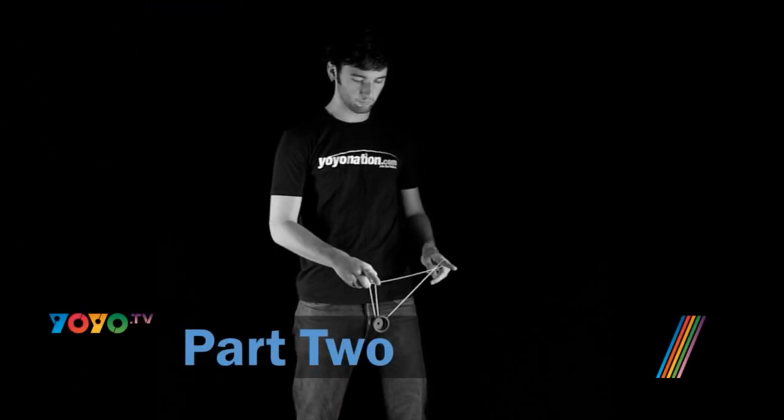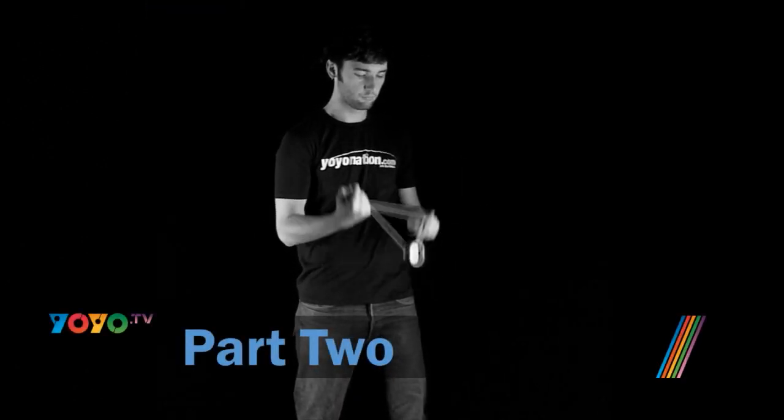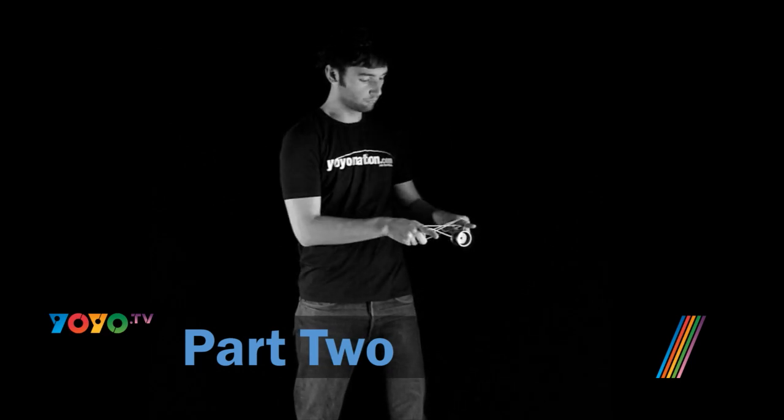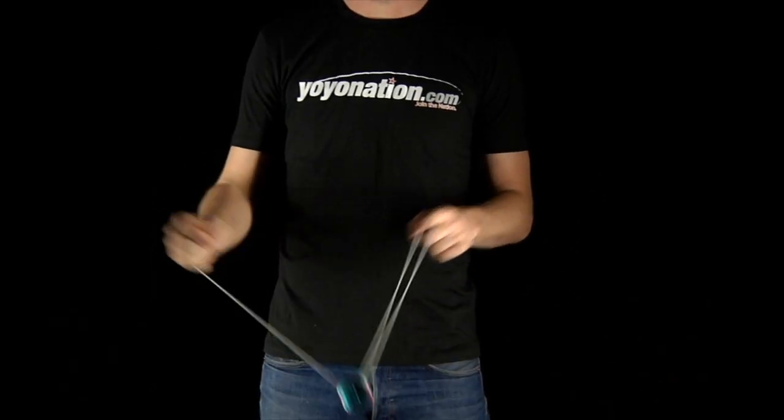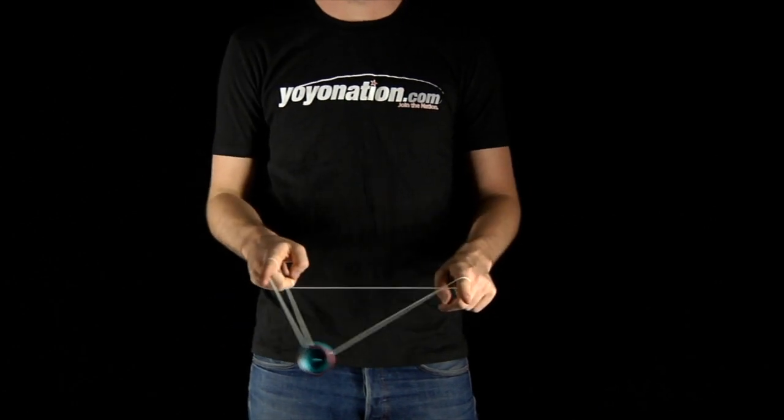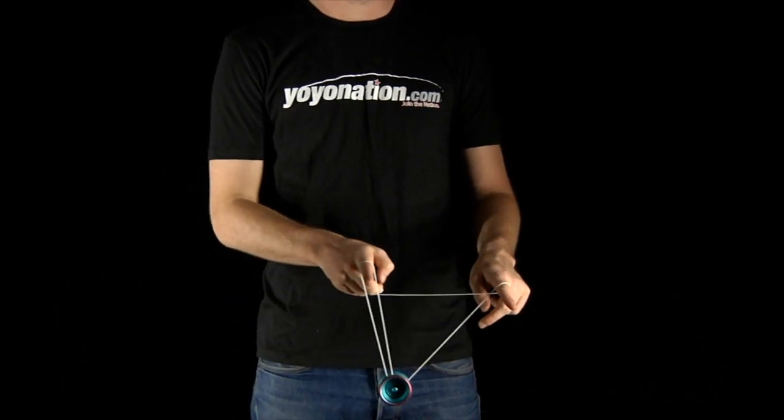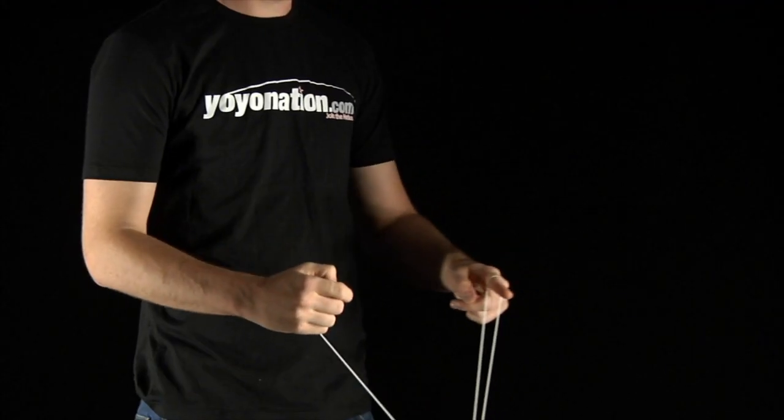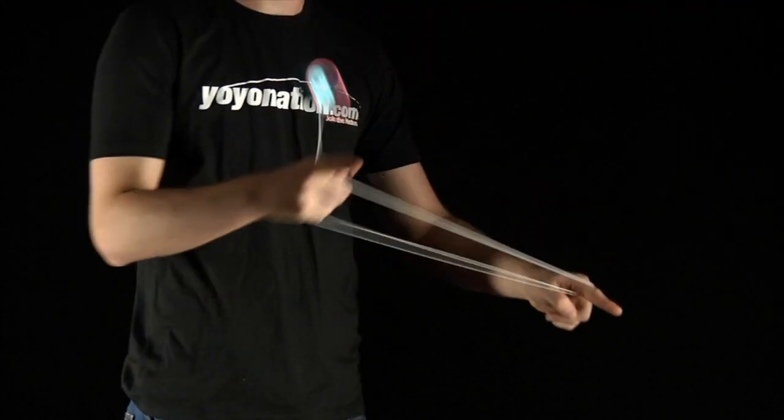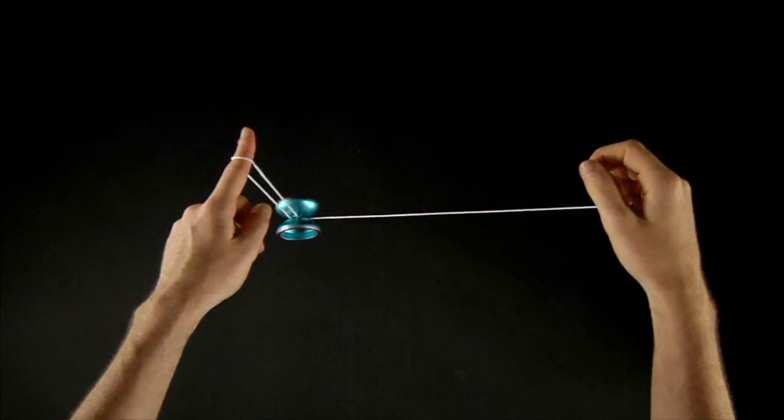Now you must reverse this motion. Pop up the yoyo and use your index finger of your throw hand to cut in front of the string, causing the yoyo to land in a trapeze and his brother. It helps to pop the yoyo to the side instead of straight up. This makes it easier to cut.